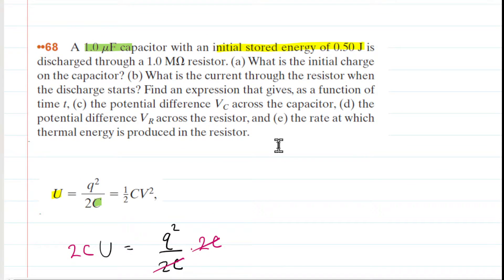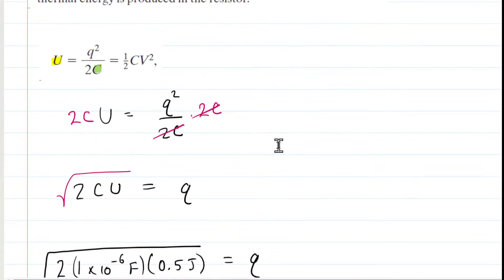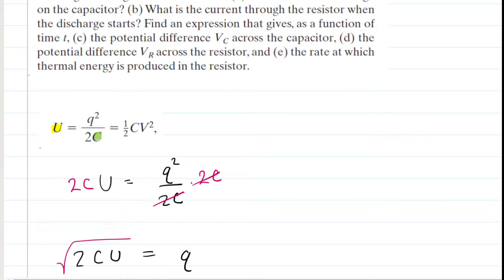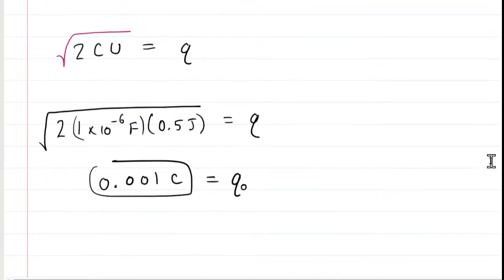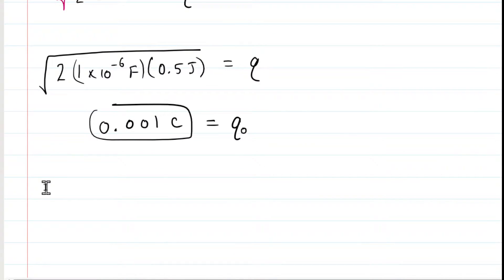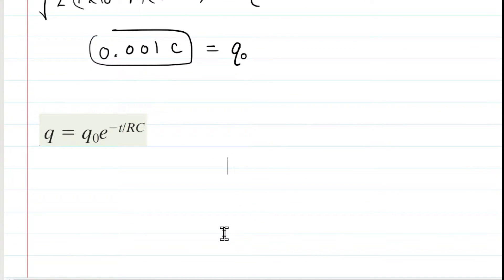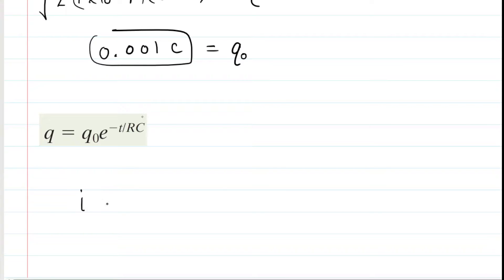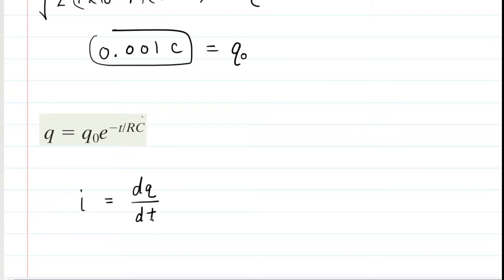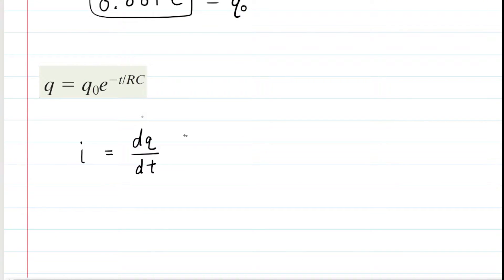Part B asks: what is the current through the resistor when the discharge starts? The capacitor begins to discharge and sends current through the resistor. We look at the equation governing the discharging of a capacitor. To get the current, we recall that current equals the rate of change in charge — the derivative of charge with respect to time. So we take our charge equation and differentiate it.